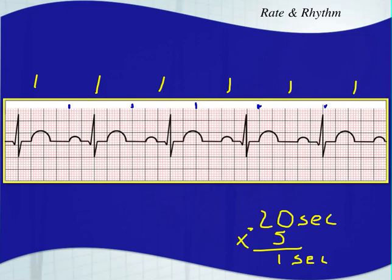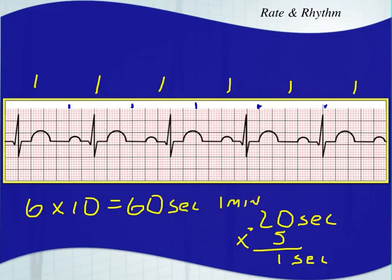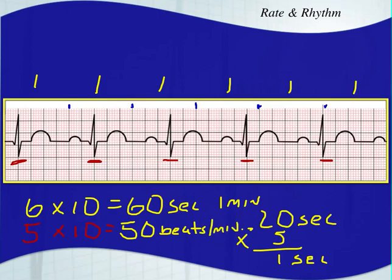This is a six-second strip. Since it's a six-second strip, six times ten equals sixty, and sixty seconds equals one minute. So to get the patient's heart rate per minute, you can do a quick estimate by counting the QRS complexes: one, two, three, four, five. Take that number five and multiply it by ten — that gives you a rough estimate of 50 beats per minute.